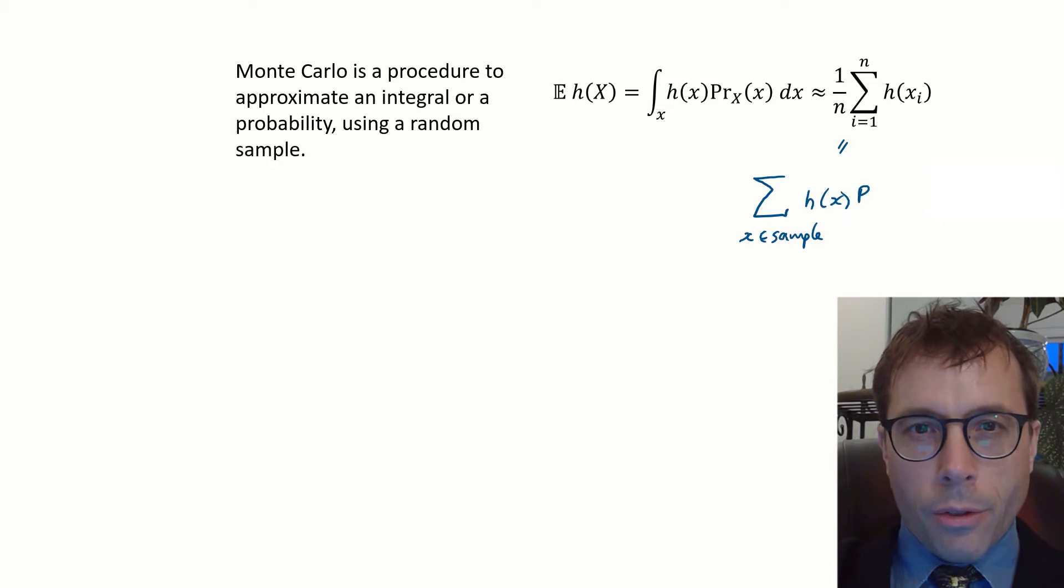Let me rewrite this. The Monte Carlo approximation is the sum over all x values in the sample we took of h of x times the likelihood for x star, the empirical distribution of the value little x. If all the sampled values are distinct, then the likelihood is just 1/n for all of them, and if there are duplicates, then it's easy to see that this formula does the right thing.